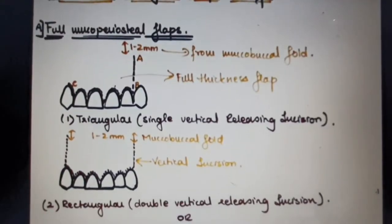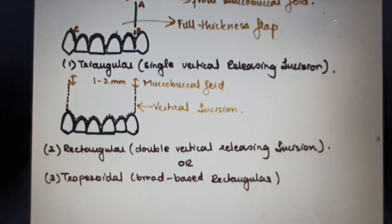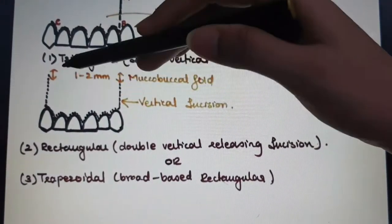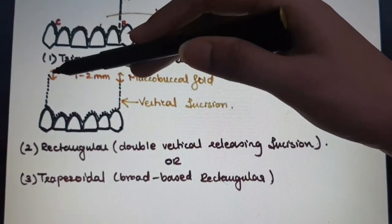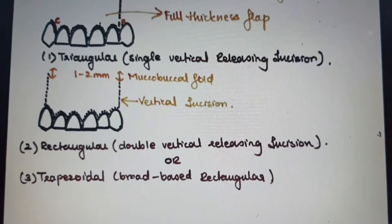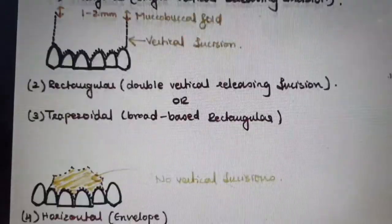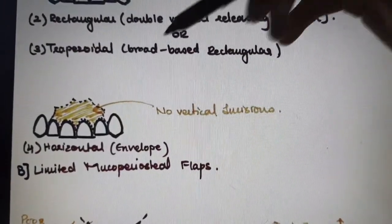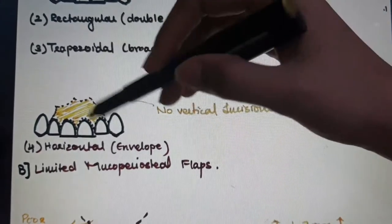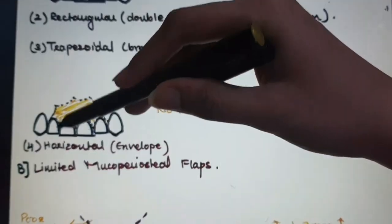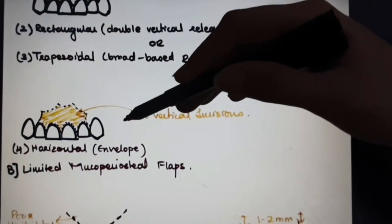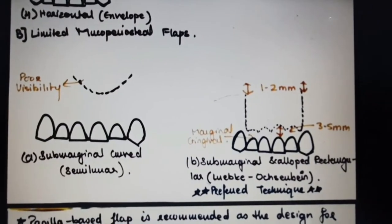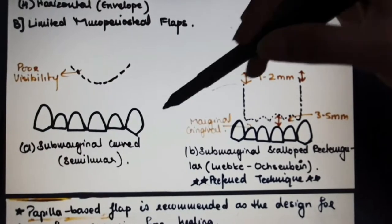In rectangular or trapezoidal design, you have two vertical releasing incisions about 1-2mm below the mucobuccal fold. Then we have envelope or horizontal flap where no vertical releasing incisions are given, direct crevicular incision is given and the flap is reflected.